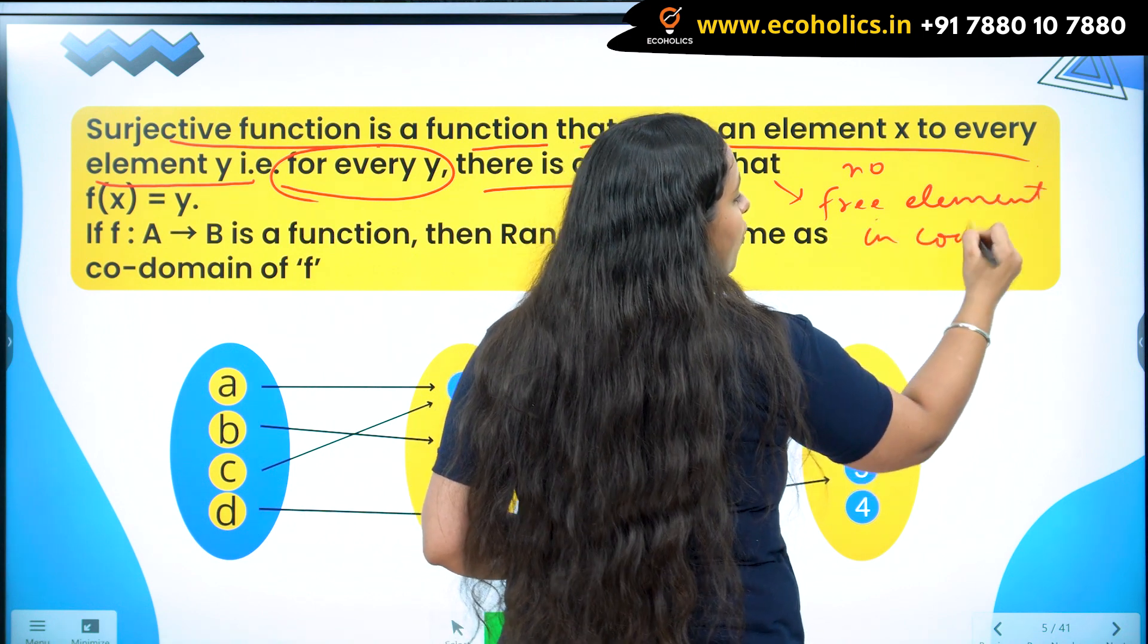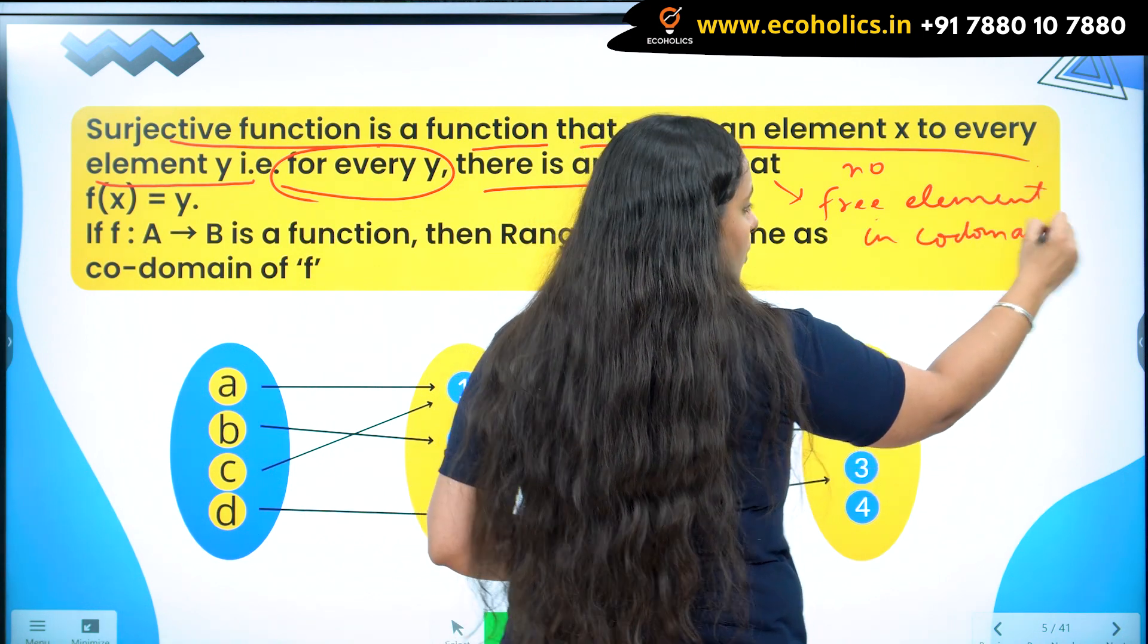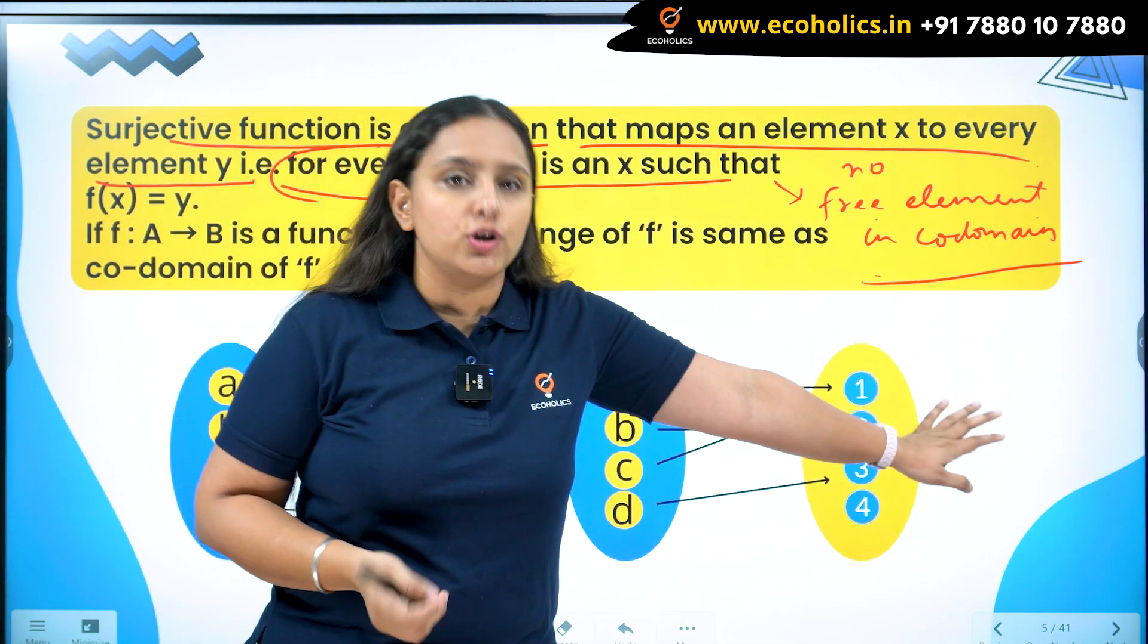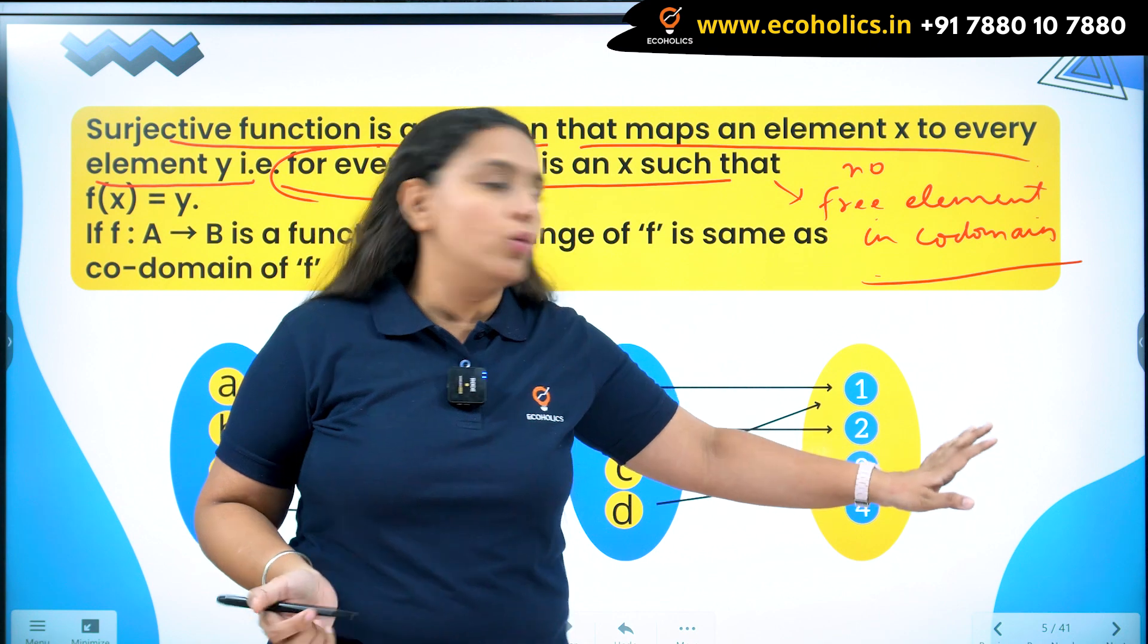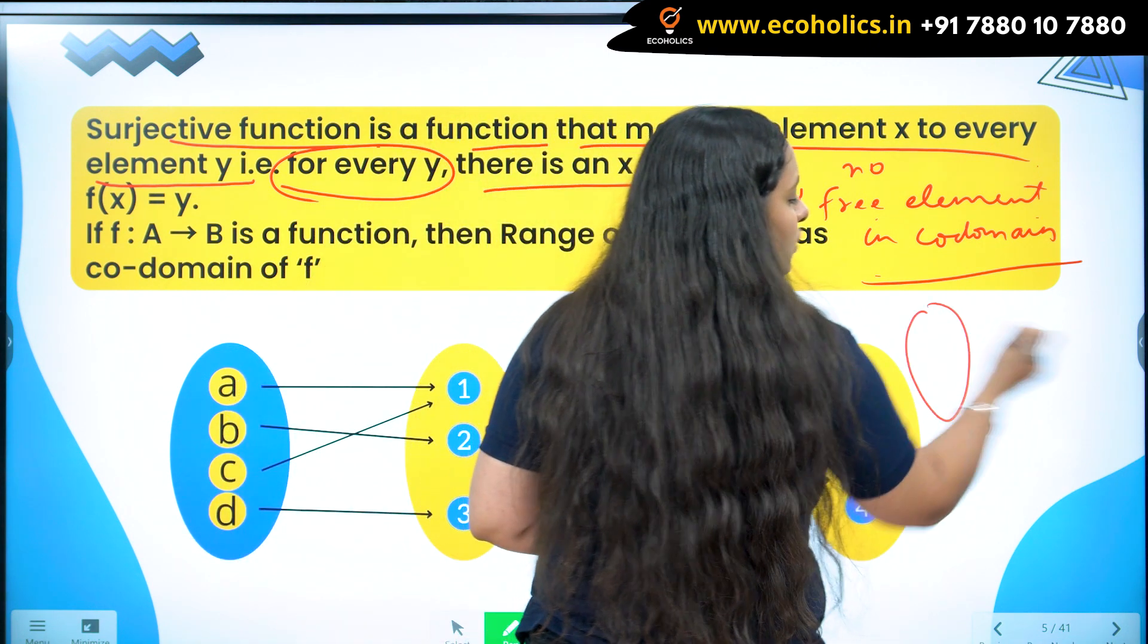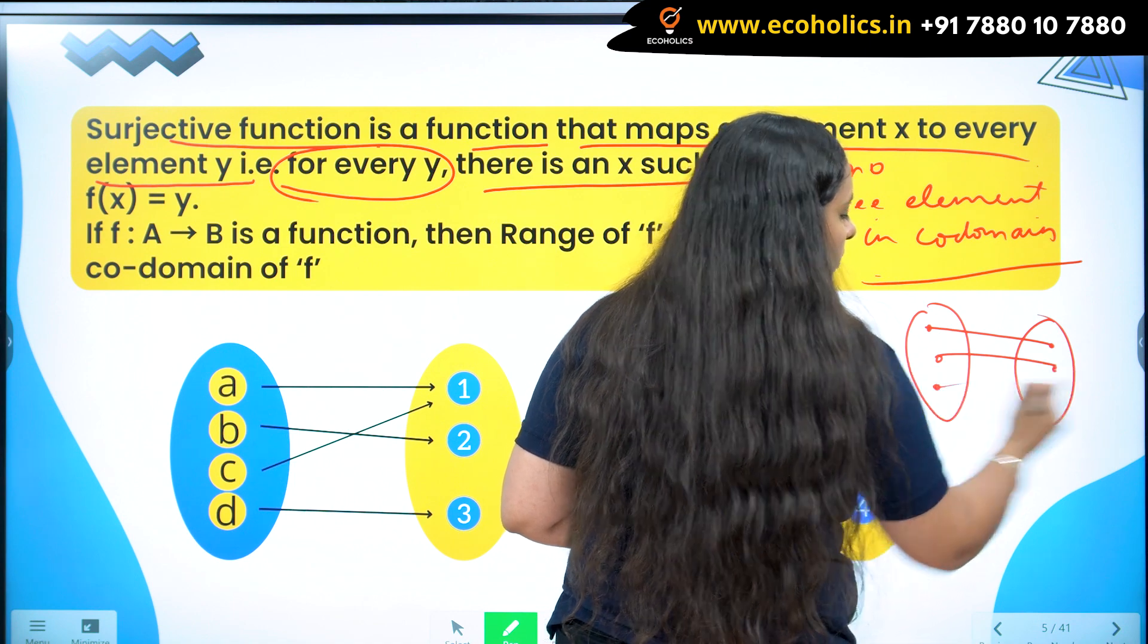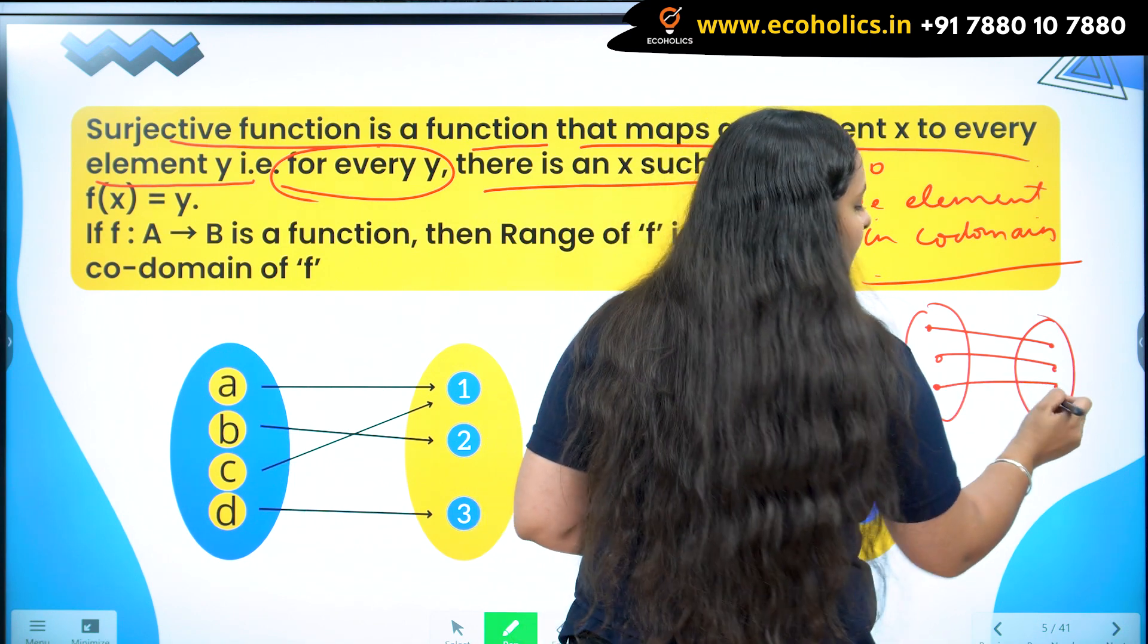That is how co-domain and range are distinguished. If there are free elements in another set to which the function is going, we call it co-domain. So if these are two functions, it's going to here, it's going to here, it's going to here, like this, but I have a free element.